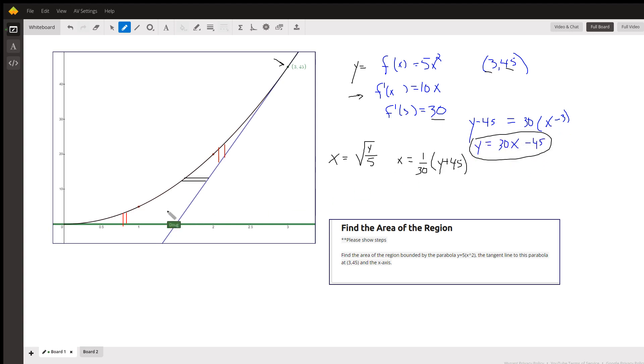Now, one way to do the problem is to divide this region into two separate regions at 1.5, because the region to the left of that vertical line has typical rectangles that look like this. So the height of that rectangle is 5x squared, the y-coordinate at the top, minus the y-coordinate at the bottom, which is 0.